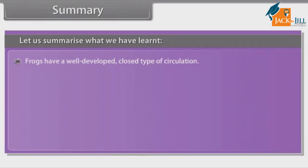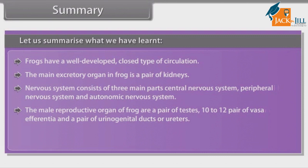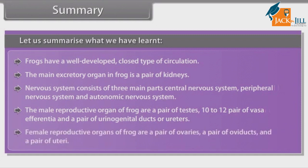Frogs have a well-developed closed type of circulation. The main excretory organ in frogs is a pair of kidneys. The nervous system consists of three main parts: central nervous system, peripheral nervous system, and autonomic nervous system. The male reproductive organs of frog are a pair of testes, 10 to 12 pairs of vasa efferentia, and a pair of urinogenital ducts or ureters. Female reproductive organs of frog are a pair of ovaries, a pair of oviducts, and a pair of uteri.